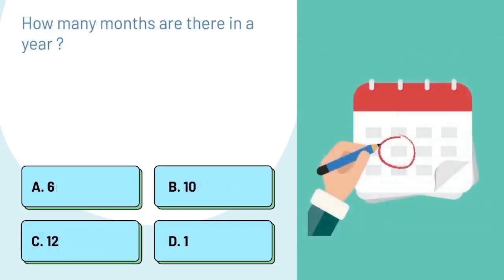How many months are there in a year? Option A, 6. Option B, 10. Option C, 12. Option D, 1.